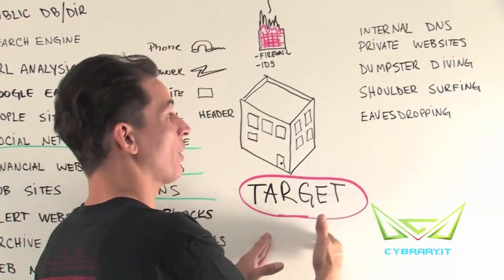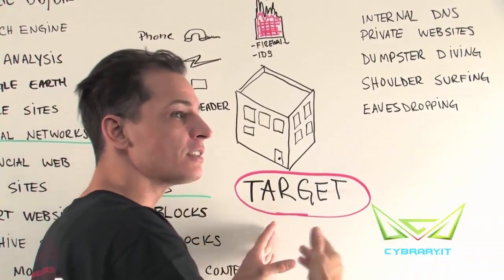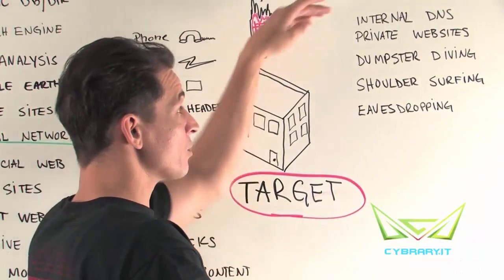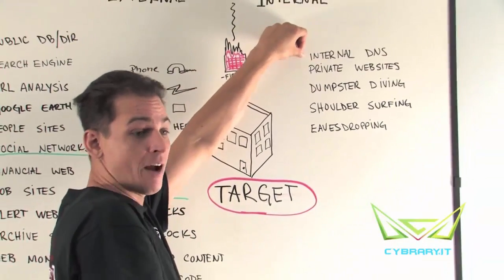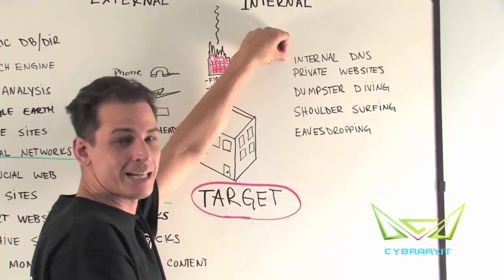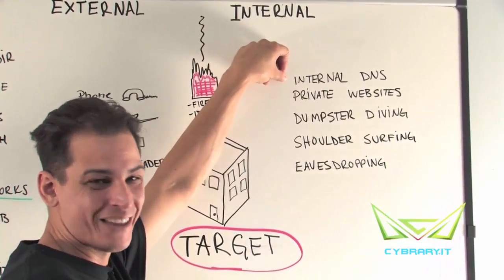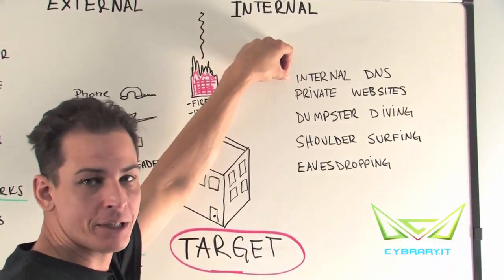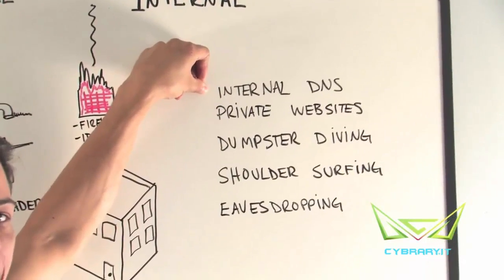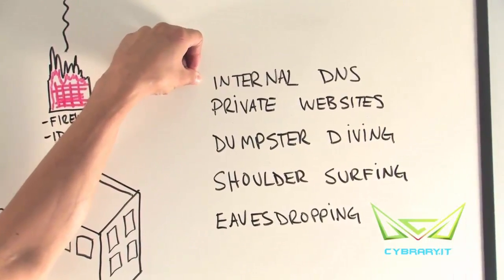So ultimately we've got a target. Inside of the company or inside of that target, this is where we can use things like finding out their internal DNS scheme — in subtitles we would call that Active Directory, but it could be any directory service: LDAP, NDS, Active Directory, to name a few.